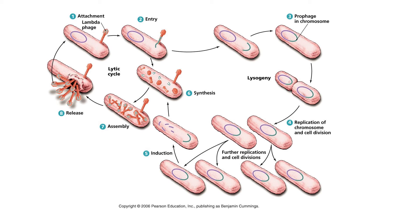Now I'm going to cover lysogenic viral replication. Lysogenic viral replication begins and ends the same as lytic, but it has a different middle part. In lysogenic viral replication, we're going to see virus and host cell specificity again. We're going to use lambda as our bacteriophage — it has DNA for its nucleic acid — and we're going to use a different strain of E. coli as our host cell.